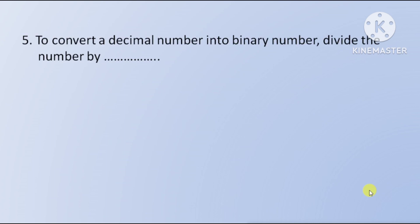Next question: to convert a decimal number into a binary number, divide the number by — option A 2, option B 8, option C 10. The right answer is option A, 2.